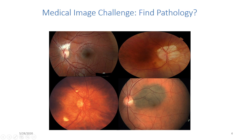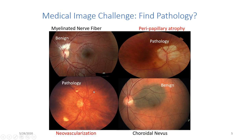If I have no background in medical imaging and I just look at these images, I might say all four images seem pathological — they all look a little different and have some unusual features. But the results show that only the top right and bottom left images have pathology, while the others are perfectly benign. Myelinated nerve fiber is benign; peripapillary atrophy and neovascularization are pathological; and the last one is a choroidal nevus — essentially an eye freckle that doesn't bother people at all.